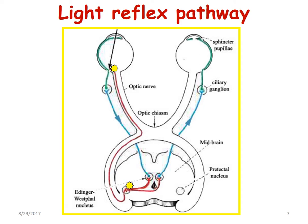The axons of the ganglion cells are going to carry the impulses along the optic nerve, pass through the optic chiasm, and then come out as the optic tract. And then they go into the midbrain area into the pre-tectal nucleus.